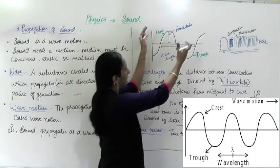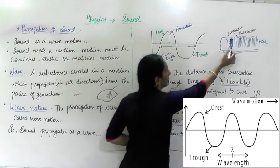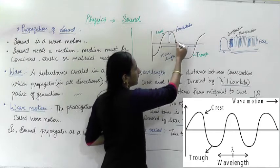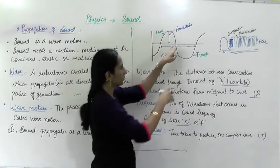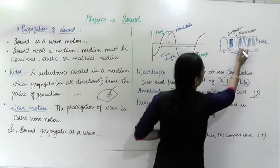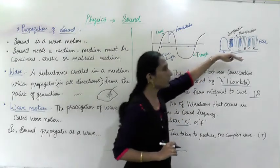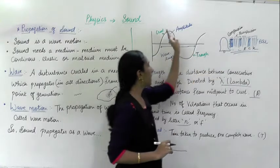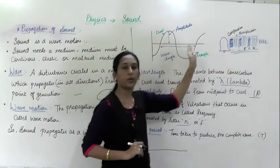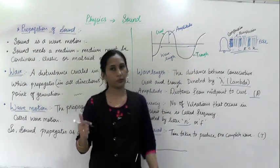For compression the density is high — graph goes up. For rarefaction, density decreases — graph goes down. Again compression — high — graph up. Then rarefaction, then compression, then rarefaction — like this the wave goes on. If you draw the graph of this pattern, compression means high part and rarefaction means low part, then again compression and rarefaction — you will get a wave pattern. That is why it is called that sound is a wave motion. The part above the line is called the crest and the part below the line is called the trough. Compression means crest and rarefaction means trough.